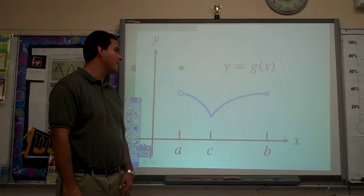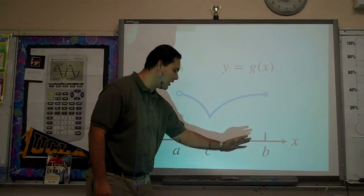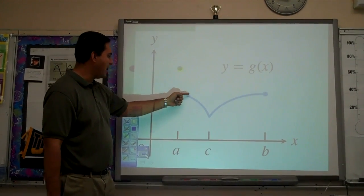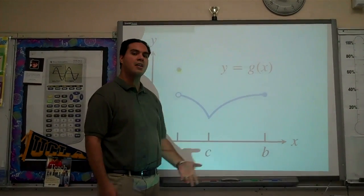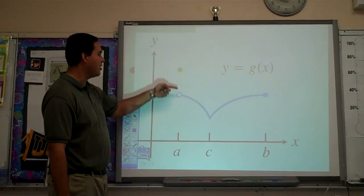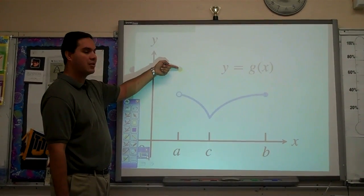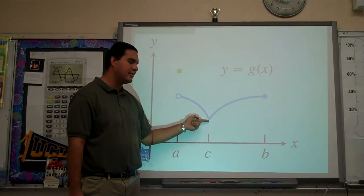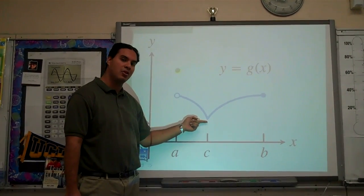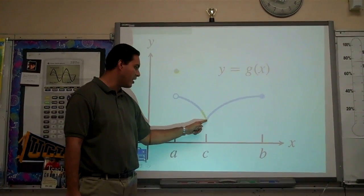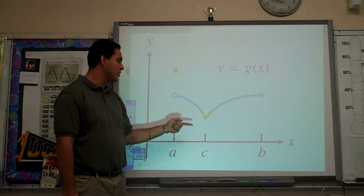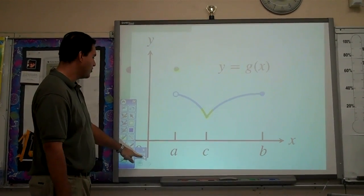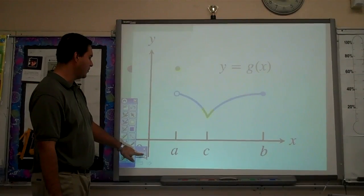Here is our next example with function G on the interval from A to B. Looking at this carefully, we have a point here and the graph continues down here at the bottom. The absolute max happens at A, because that is where the highest output value is. The absolute min happens at C, which is also a relative min — it is the lowest point and also the absolute min on the whole interval.